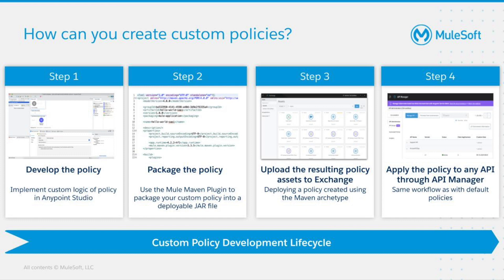In step three, you will need to upload your policy to Exchange. For this step, you have two choices: you can either deploy your policy using the Maven archetype, or you can do so by manually setting up your Exchange deployment configurations. The last step is the same as with out-of-the-box policies, where you go into API Manager, see your new custom policy, and apply it to your APIs, or make it an automated policy.